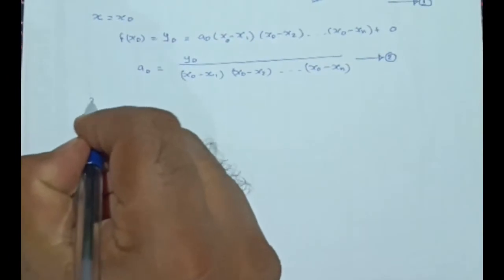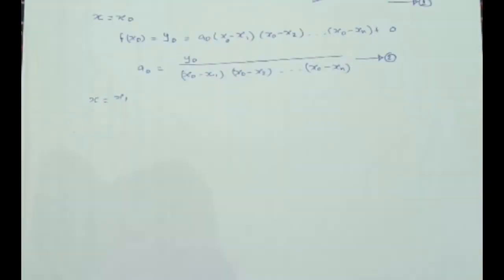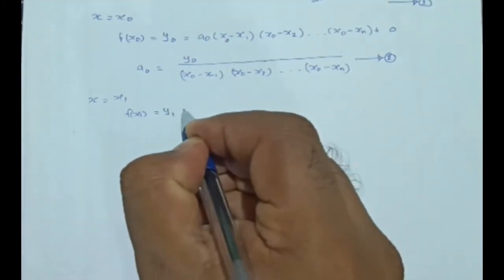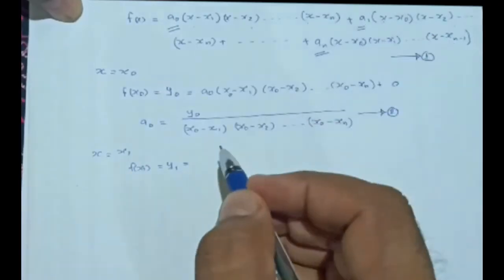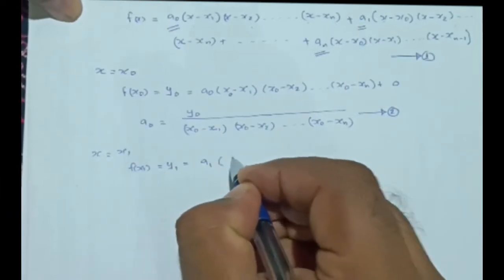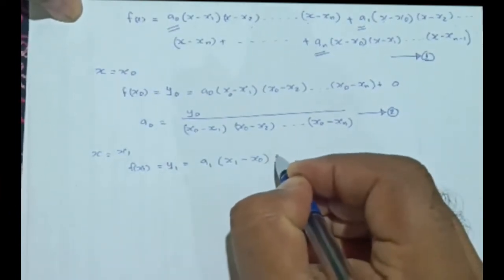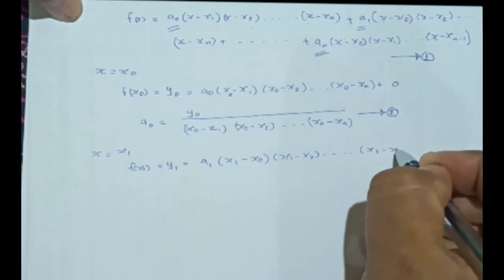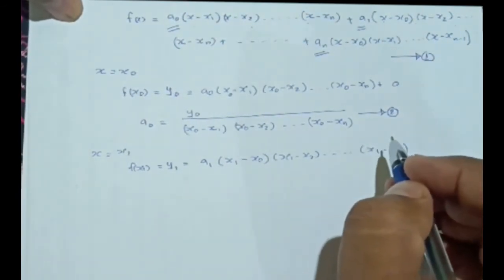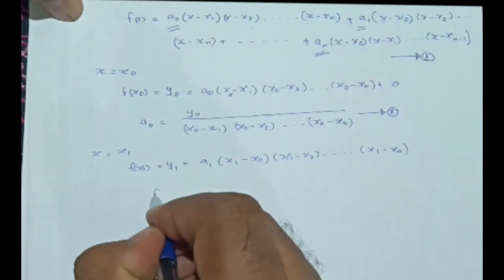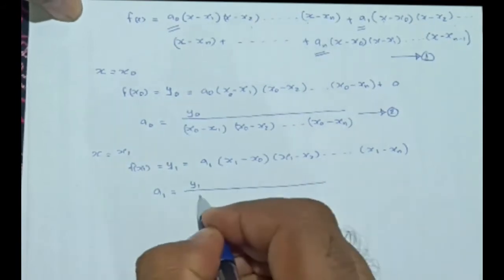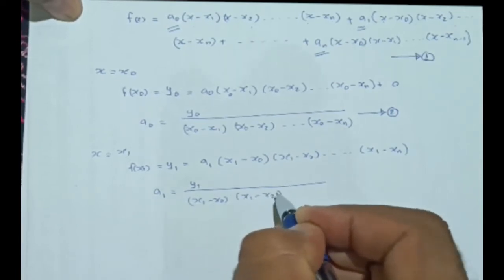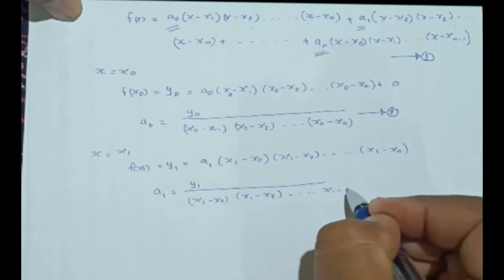Let's put x = x1. Then equation 1 becomes f(x1) = y1. The first term vanishes; the second term is retained: a1·(x1−x0)·(x1−x2)·...·(x1−xn). All other terms vanish. From this equation, we have a1 = y1 / [(x1−x0)·(x1−x2)·...·(x1−xn)].